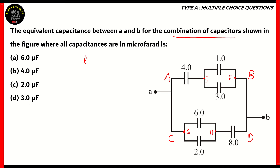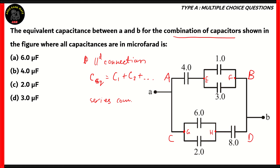For the parallel connection, it is pretty straightforward. The C equivalent will be equal to C1 plus C2 plus etc. So, C equivalent will be the addition of all the capacitances in a parallel connection. And for the series connection, 1 over C equivalent will be equal to 1 over C1 plus 1 over C2 plus etc. So, the reciprocal of C equivalent will be the sum of the reciprocals of each of the given capacitances.